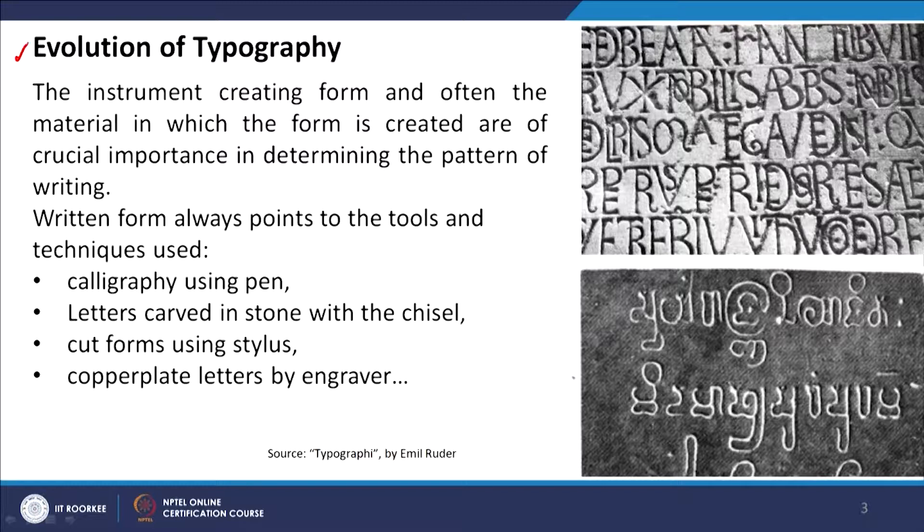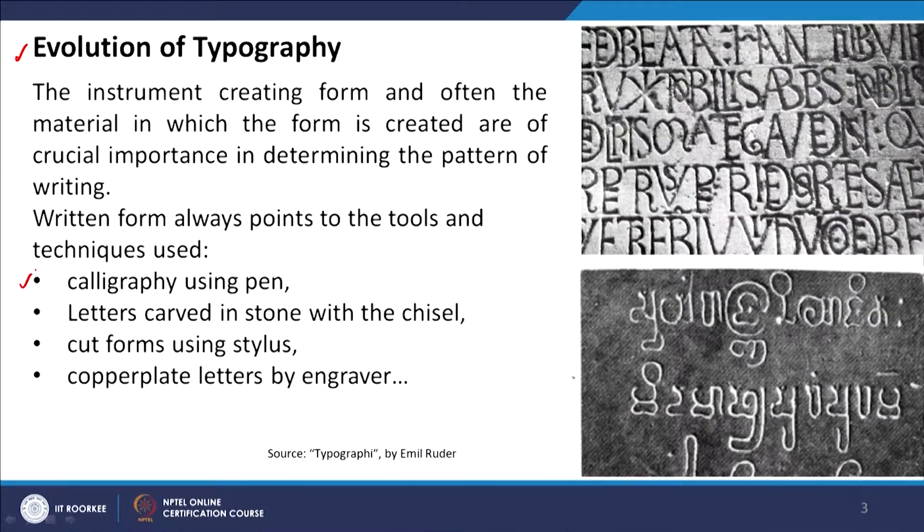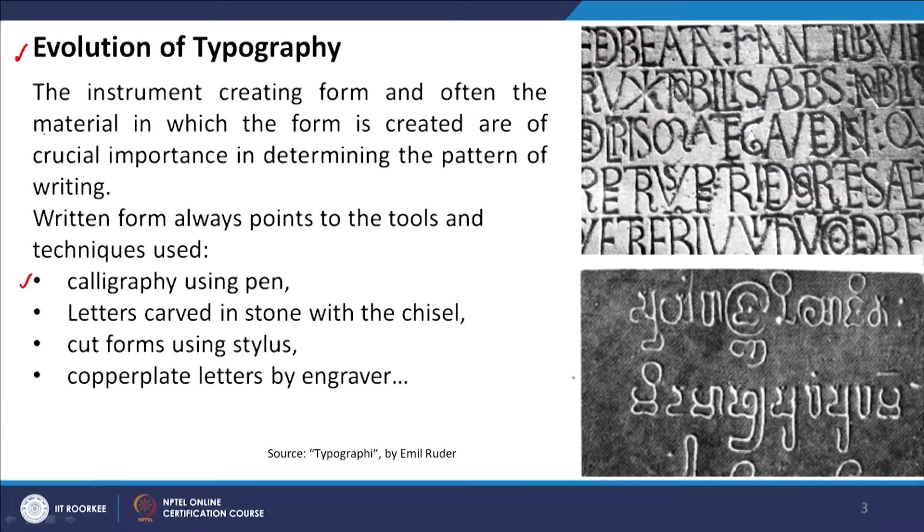We will start with the evolution of typefaces and go into history to see how they evolved. Initially, typography started evolving when people chiseled on adobe plates in Mesopotamia, carved marble stone in Roman and Greek civilization, or inscribed calligraphically on papyrus in Chinese origins. Here we can see that the material, tools, and techniques created an impact on the particular typefaces. Now we will focus mostly on Roman or English typefaces.